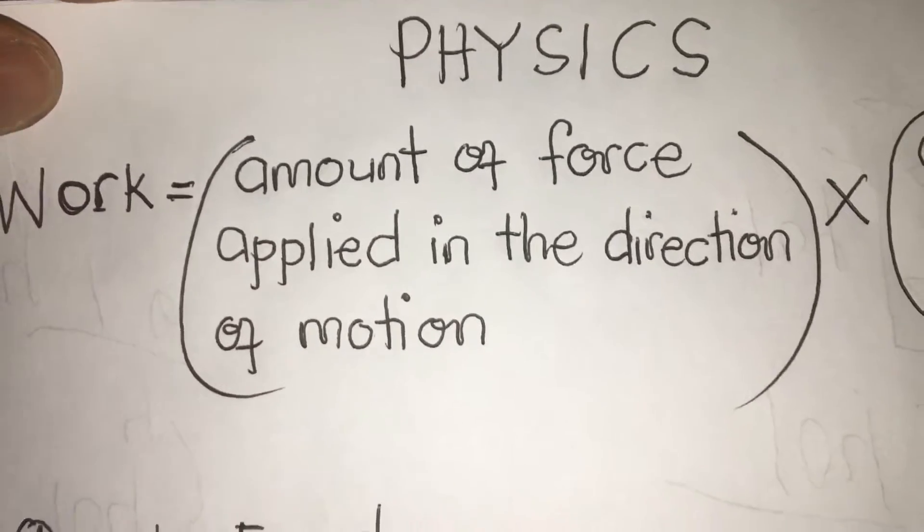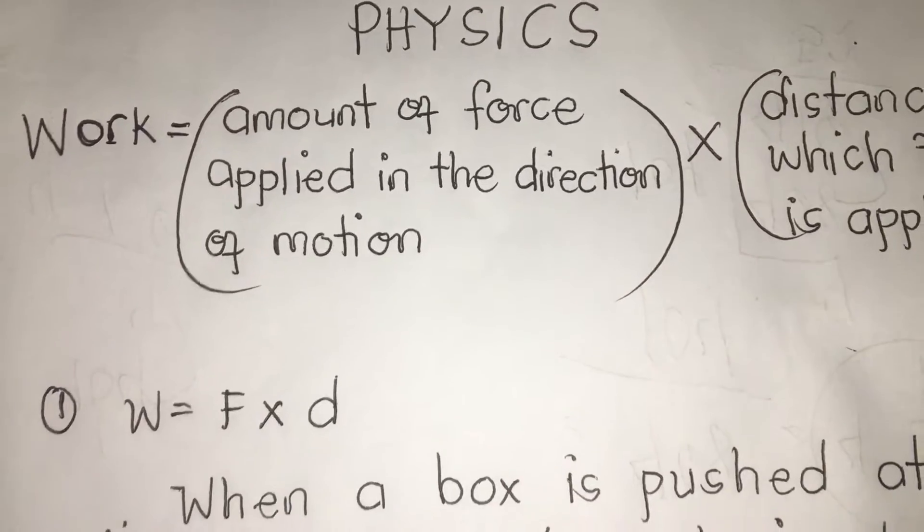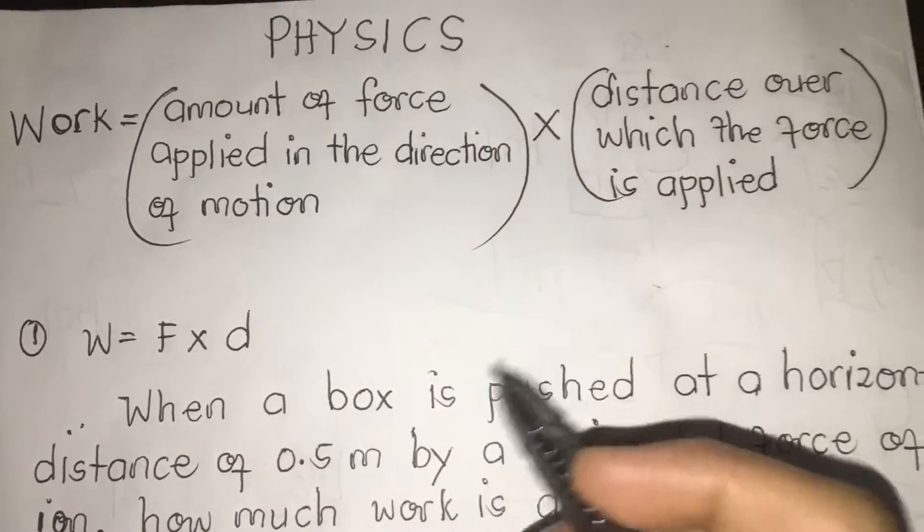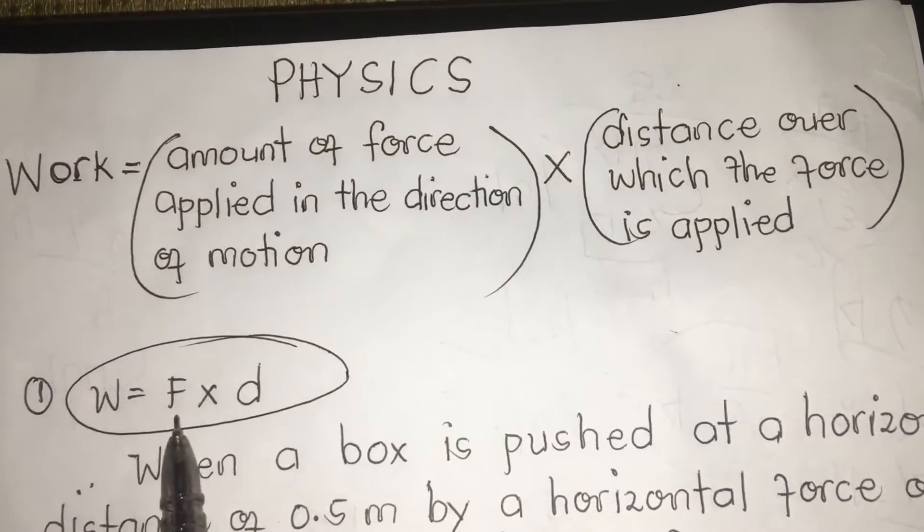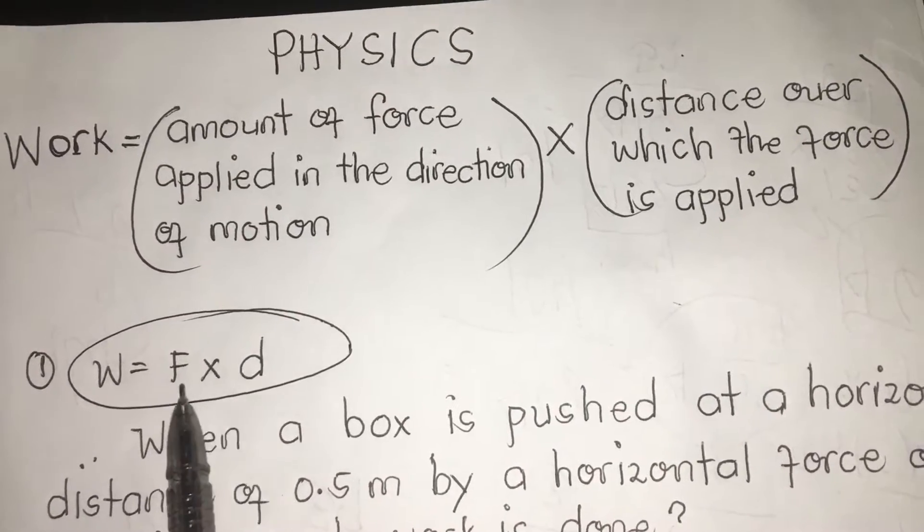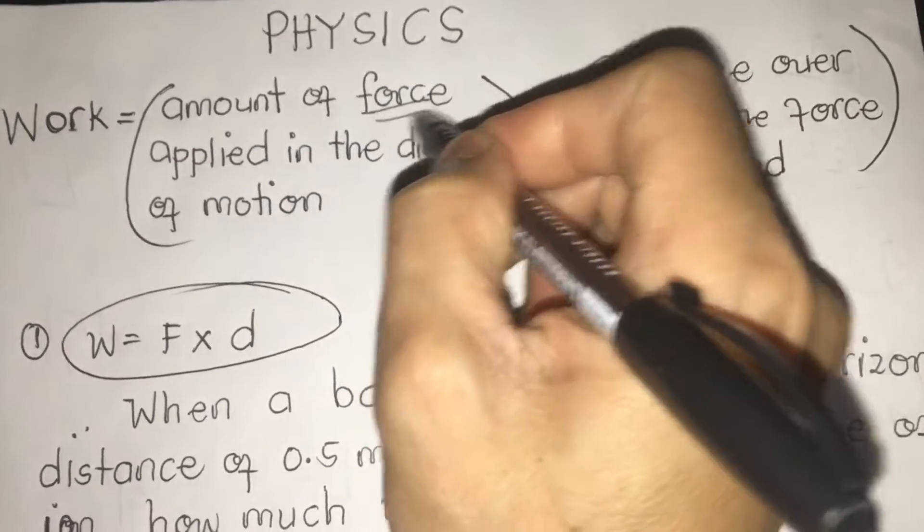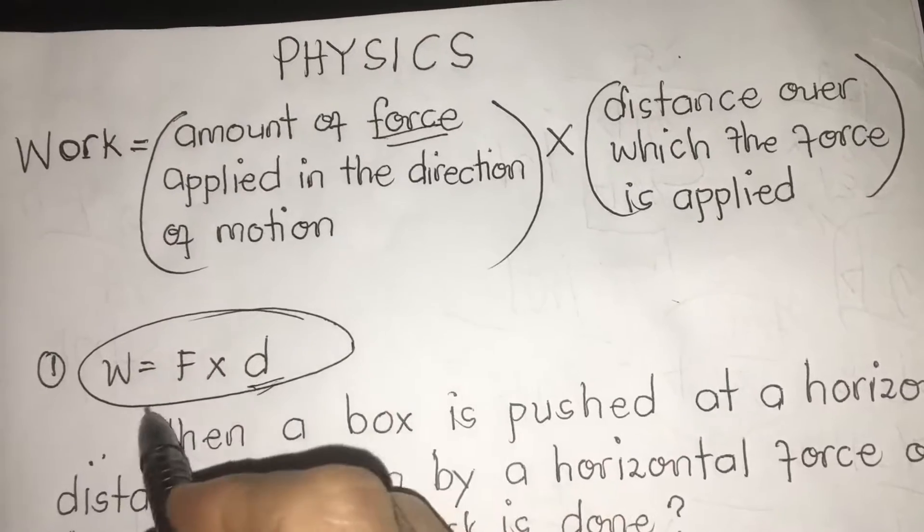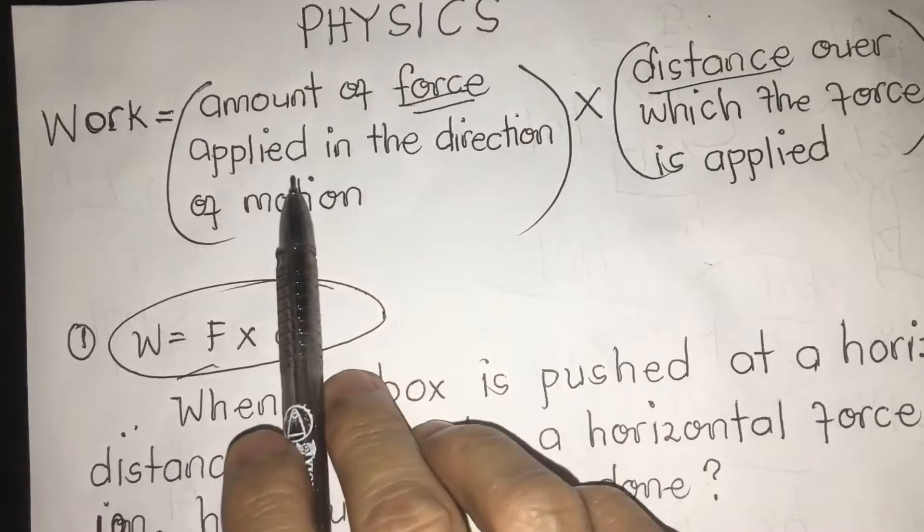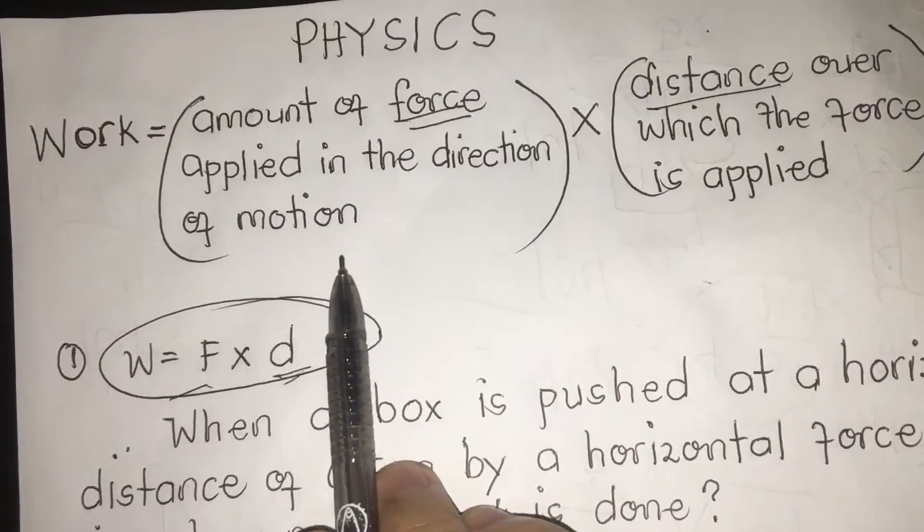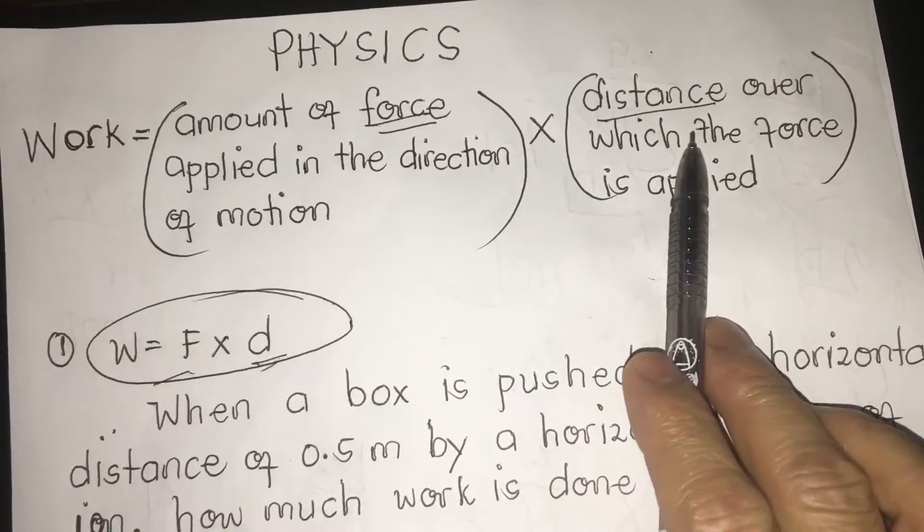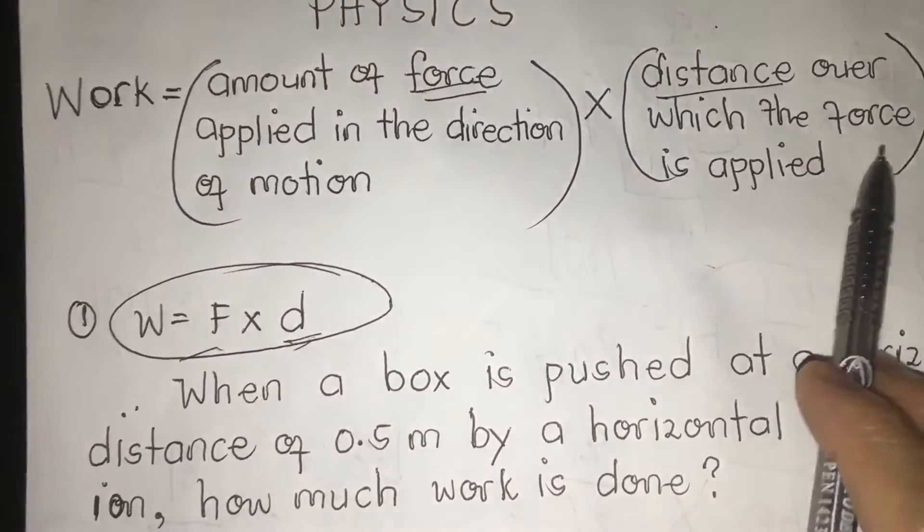Now, I have first here what you call the formula on how to solve work. Remember, our formula is W = F × D. That means to say, F stands for force, D stands for distance, work is equal to amount of force applied in the direction of motion times distance over which the force is being applied.